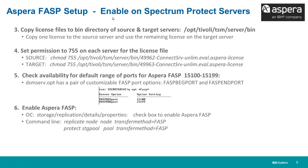Set the permissions to 755 for each of the server license files using the chmod command. Verify that the default port ranges for Aspera FASP — 15,100 to 15,199 — are available. If they're not, you can set them using the FASBegPort together with the FASP import options in your DSM server options file.